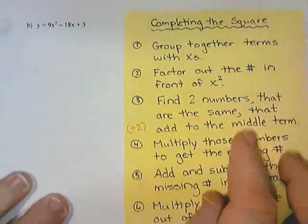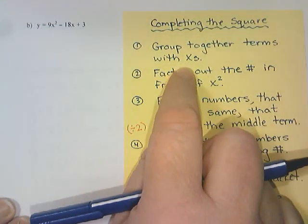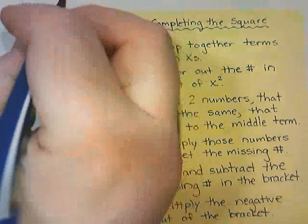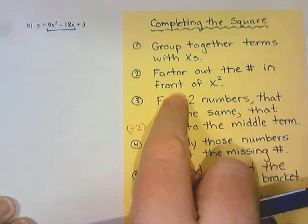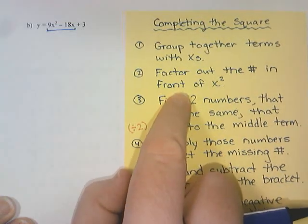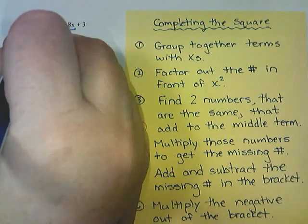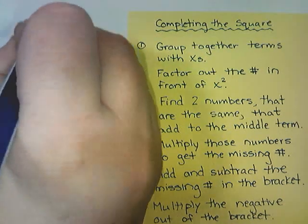So first thing we're going to do is group together our terms that have x's. So that is the 9x² and the -18x. And we are going to factor out the number in front of x². So I am going to factor out the 9.